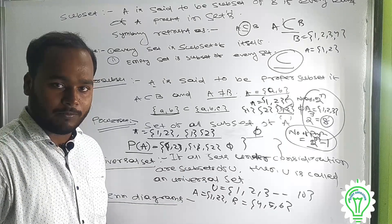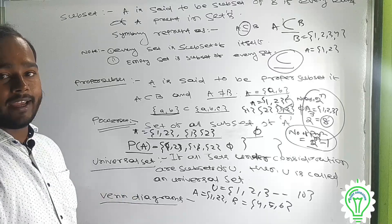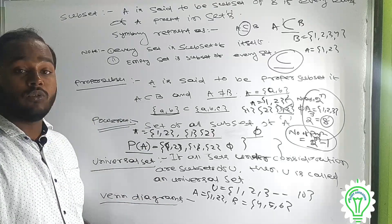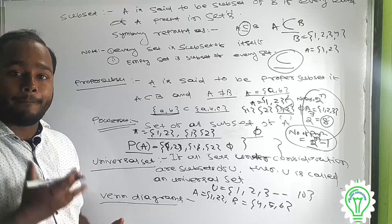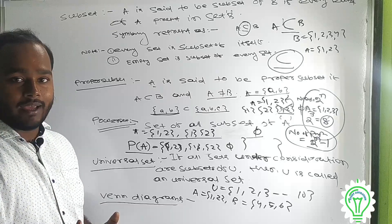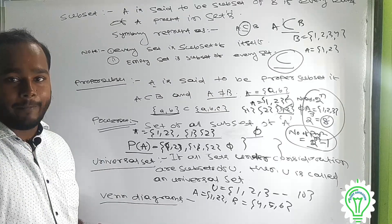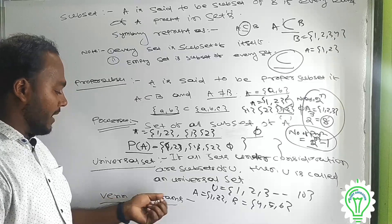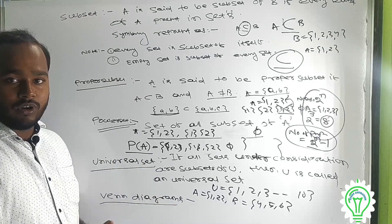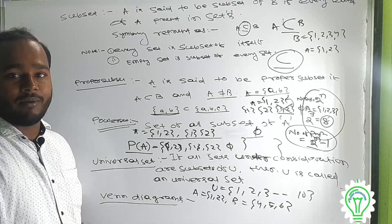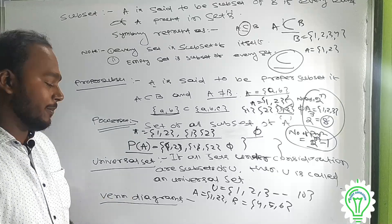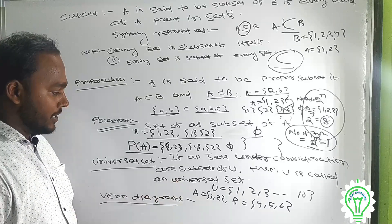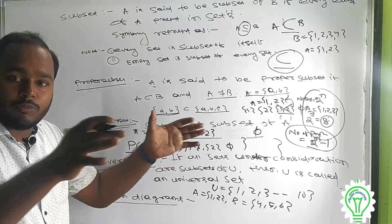Universal set is not a confusion. This is a Venn diagram. A Venn diagram represents sets using figures, which are easily understood. We can see the Venn diagram — the set represents the figure. Why do we use the figure? We know that universal set is a very big set.